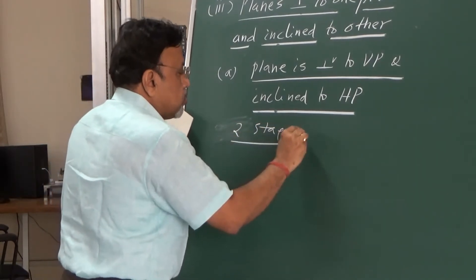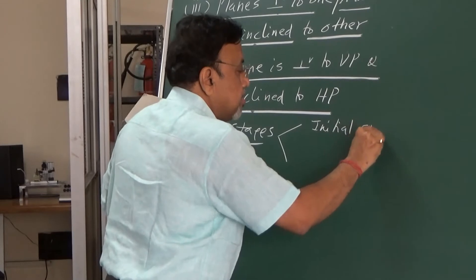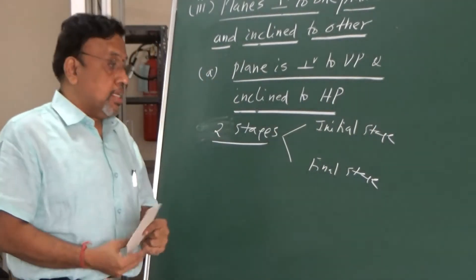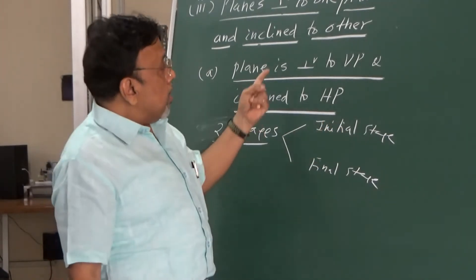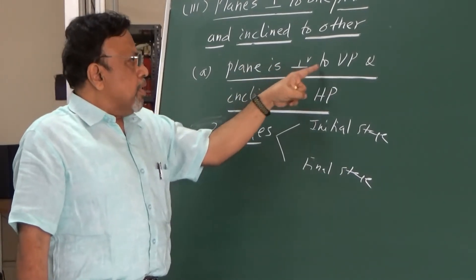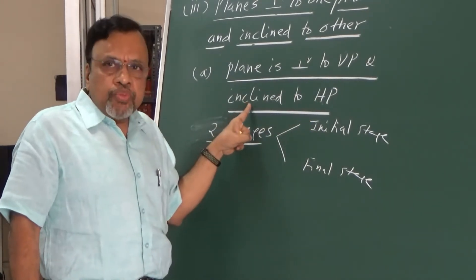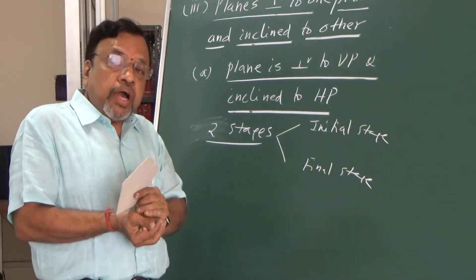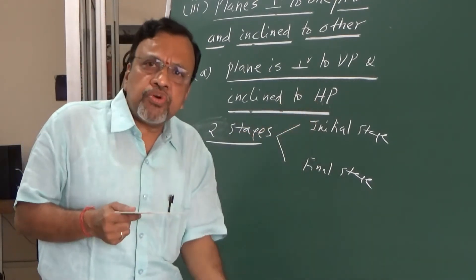The two stages are: the initial stage and the next stage. In the initial stage, the lamina should be parallel to one plane and perpendicular to the other. Since I want the plane to be perpendicular to VP and inclined to HP, I will initially assume the lamina to be parallel to HP. Since the lamina is parallel to HP, the true shape and size will be seen in the top view, so I will draw the top view first.